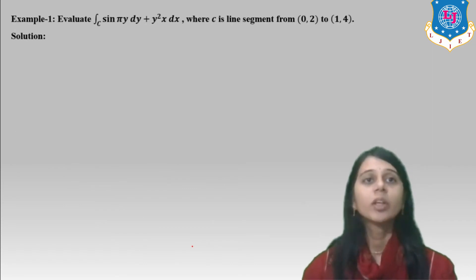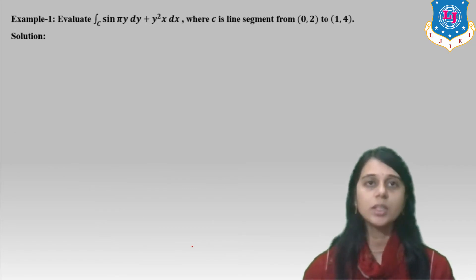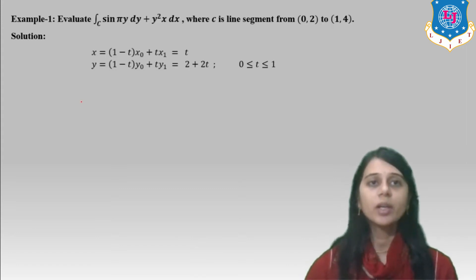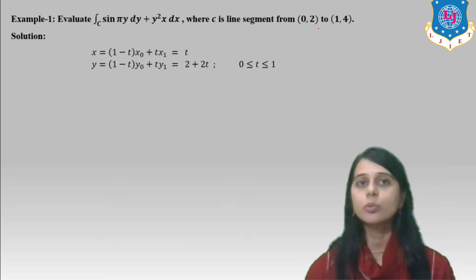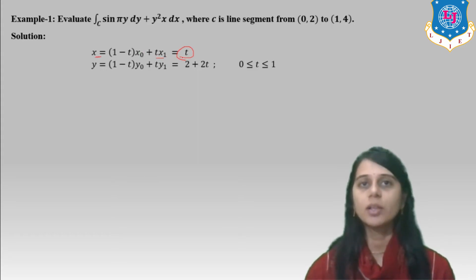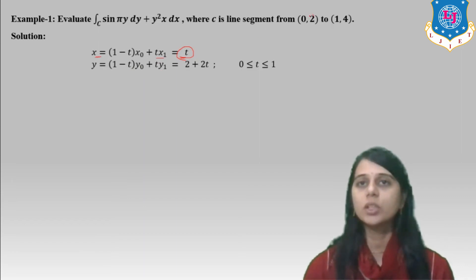One example: evaluate the integral over C of sin(πy) + y²x dx, where C is a line segment from (0,1) to (2,4). We find x and y for the line segment. Here x = (1−t)x₀ + t·x₁, giving x = 2t. For y = (1−t)y₀ + t·y₁, putting the initial and end values y₀=1 and y₁=4, we get y = 1 + 3t, where t is 0 to 1.